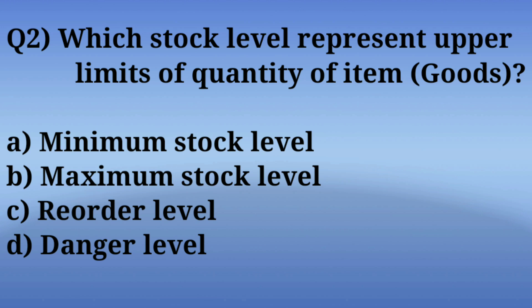Question number 2: Which stock level represents the upper limit of quantity of items and goods? Options are: A. Minimum stock level, B. Maximum stock level, C. Reorder level, D. Danger level. The correct answer is Option B — Maximum stock level, as its name indicates the maximum quantity held.